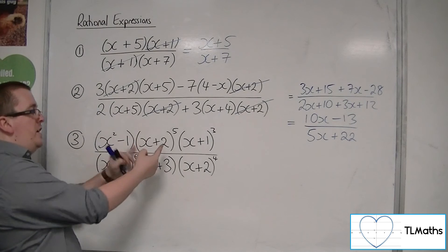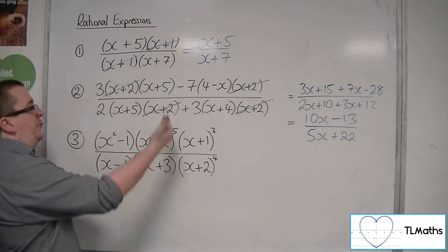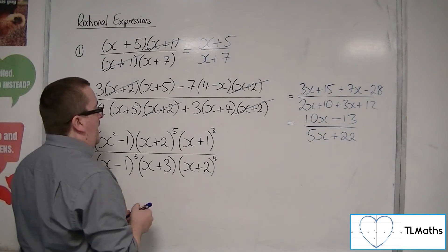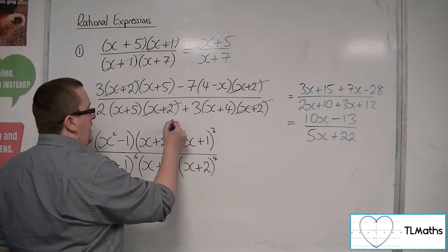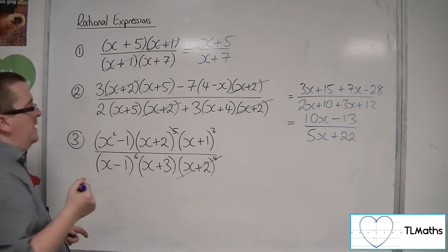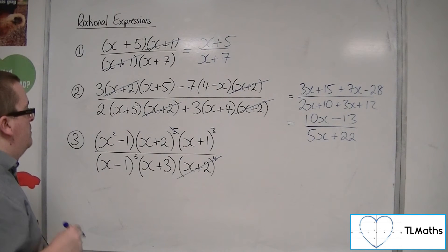Because this is x plus 2 5 times, that's x plus 2 4 times. So, I can cancel 4 x plus 2's from the numerator and denominator. So, I can cancel out 4 from there, and all of the 4 from there. And so, I'm just left with a single x plus 2 in the numerator.